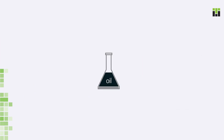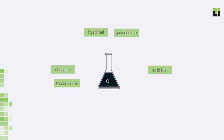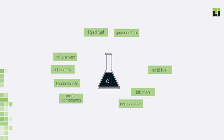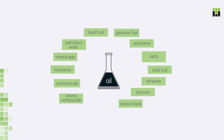Thousands of petroleum products are manufactured today. The major ones are liquid, gases and solid fuel, lubricants and technical oils, mineral wax, bitumen, aroma compounds, carbon black, ethylene, petroleum acids and salts, and high alcohols.